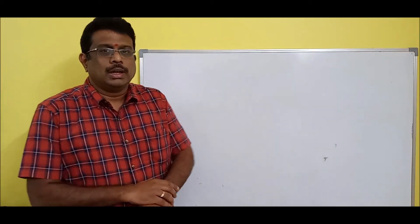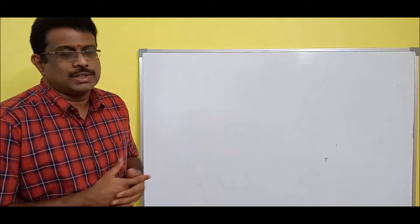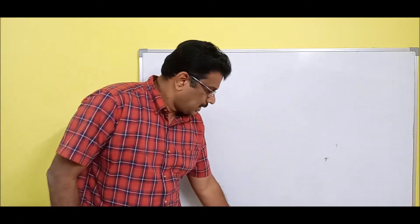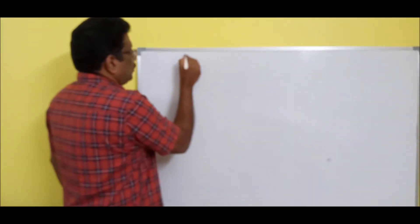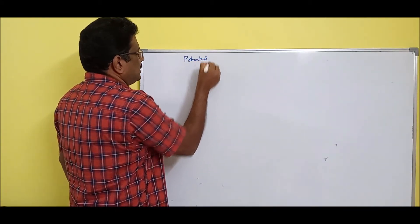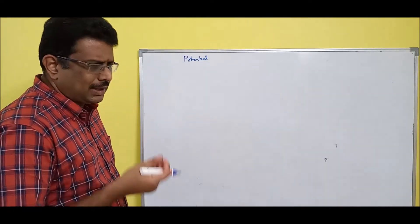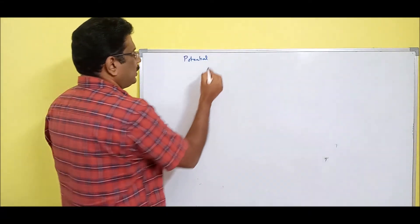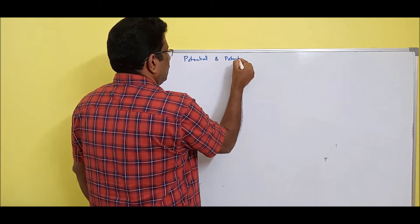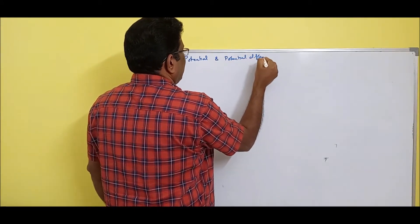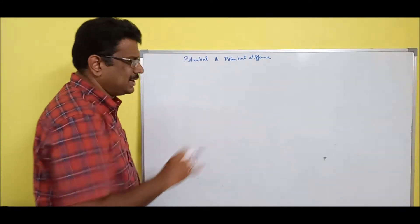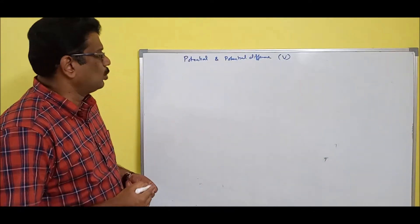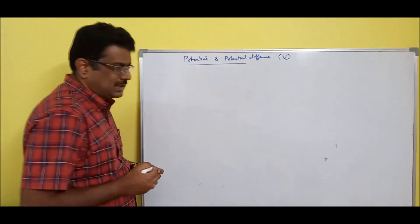Welcome back. In the last video session, we discussed work done, which is nothing but energy spent. Now let us discuss potential — in general, it is nothing but voltage. The electrical term is voltage; the electromagnetic term is potential. Potential and potential difference are both related, and the unit is volt. So the topic is potential and potential difference.